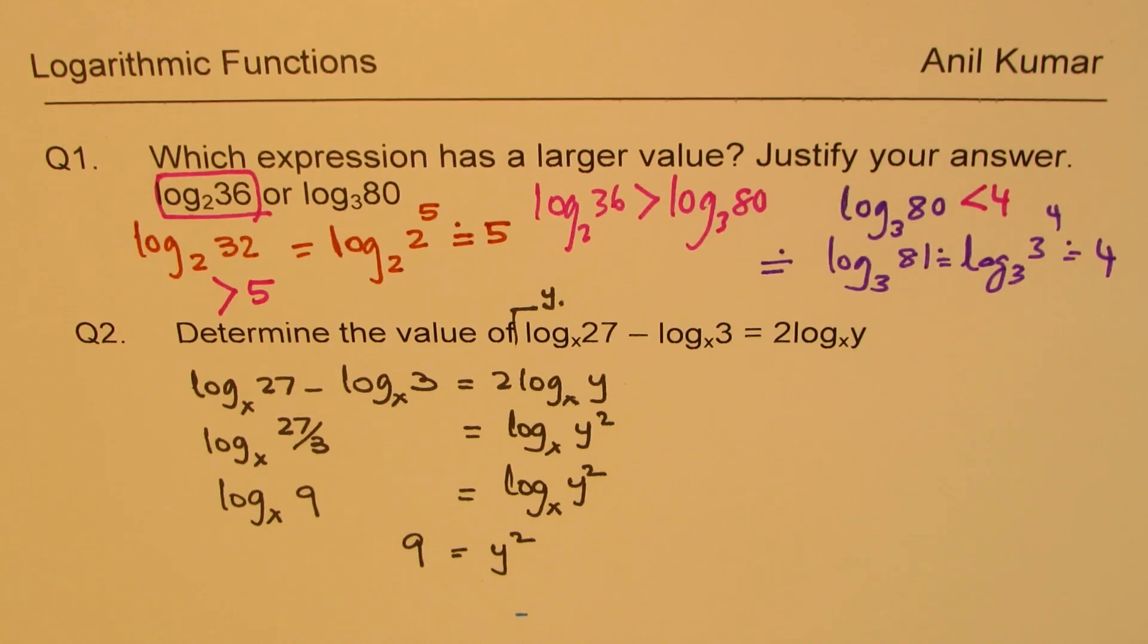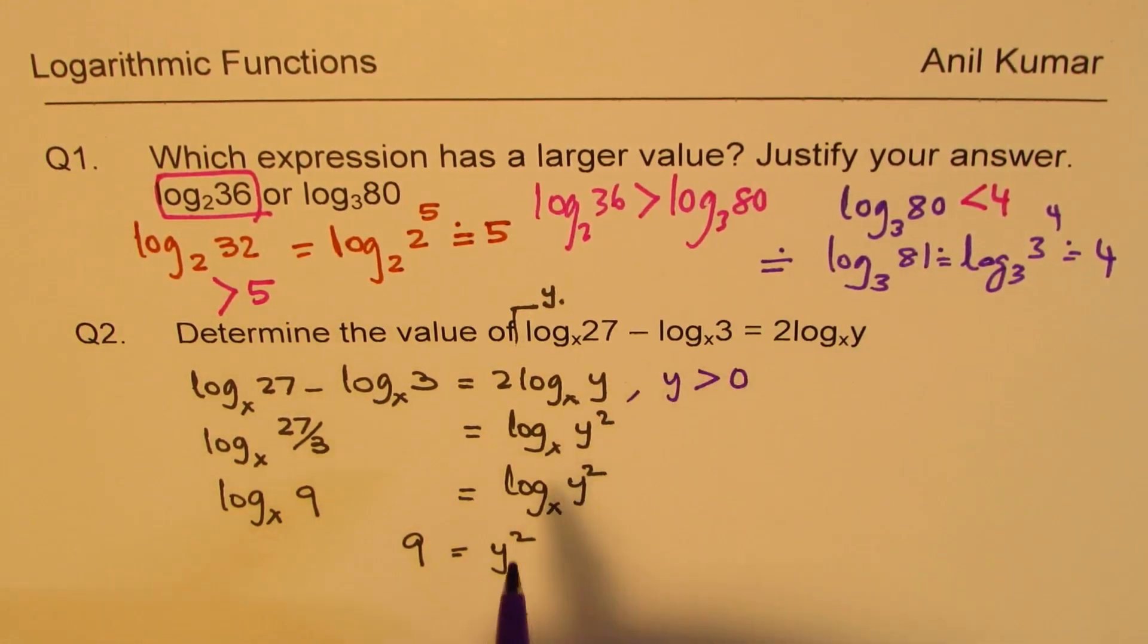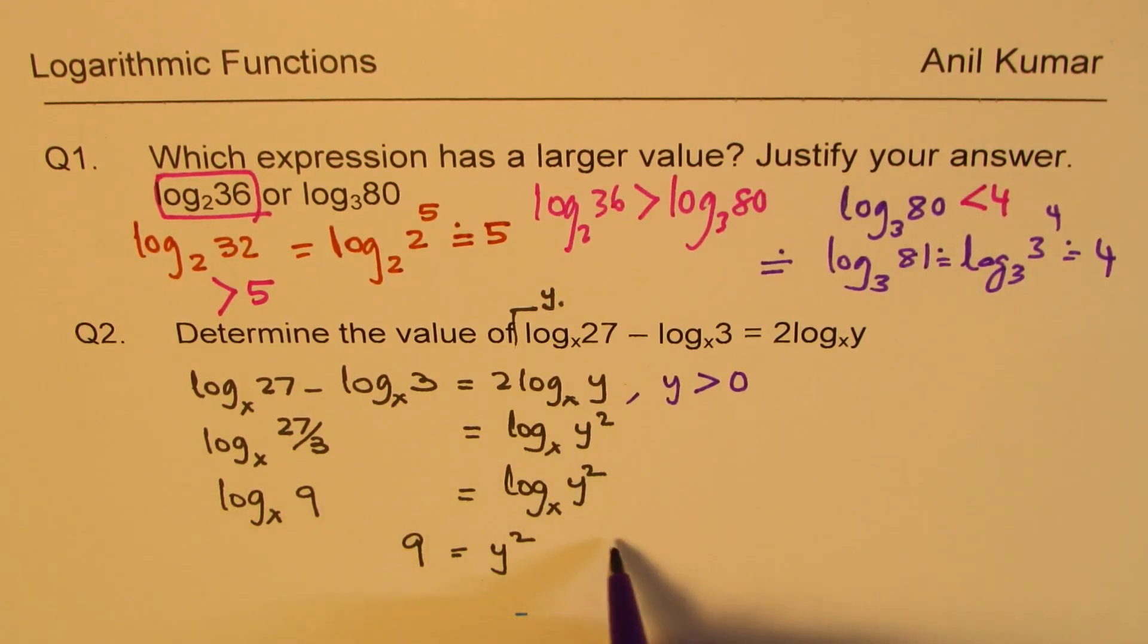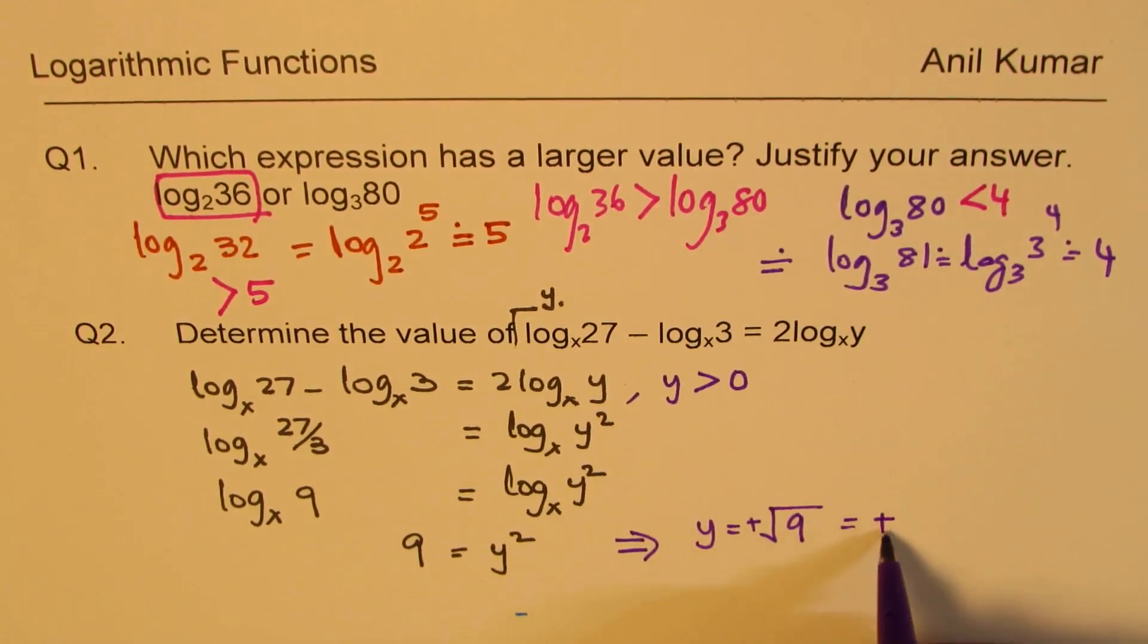Now, as far as y is concerned, we know y has to be greater than 0. Otherwise, log is not defined. So from here, what is y equal to? Y equals square root of 9, and we are only going to take positive value. So positive 3 is going to be our answer.